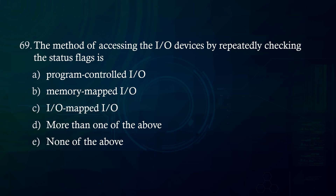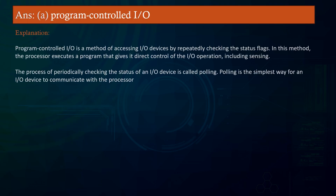Program-controlled I/O is a method of accessing I/O devices by repeatedly checking the status flags. In this method, the processor executes a program that gives it direct control of the I/O operation. The process of periodically checking the status of an I/O device is called polling. Polling is the simplest way for an I/O device to communicate with the processor.